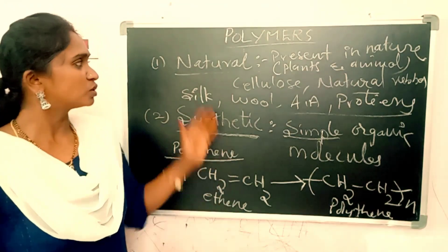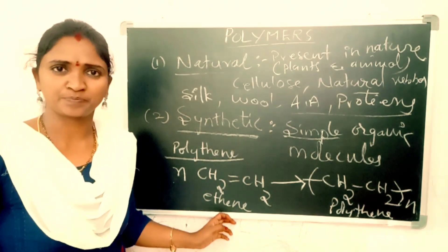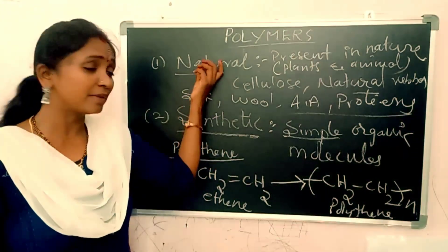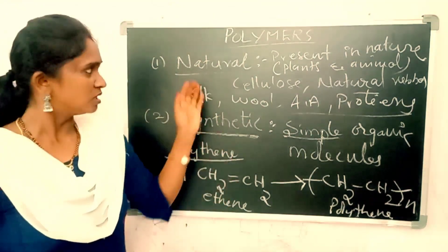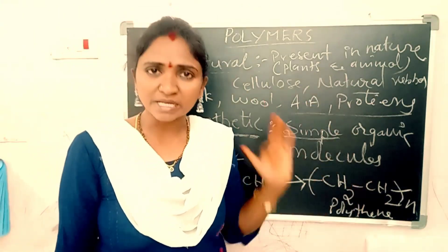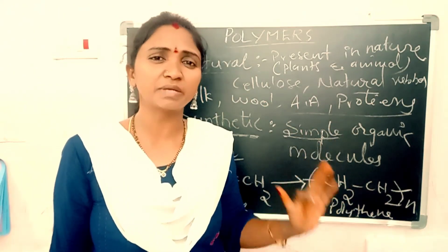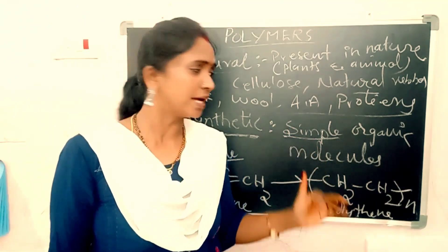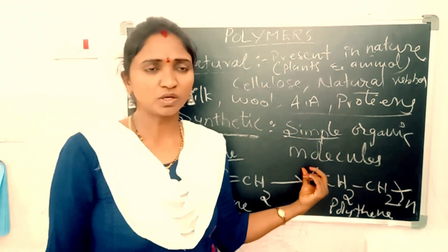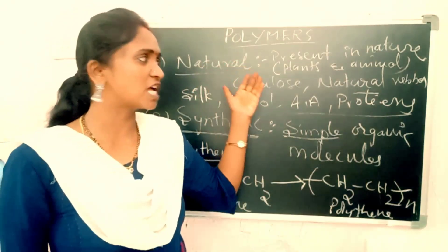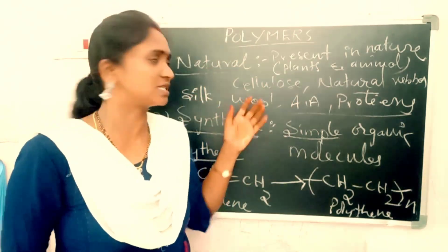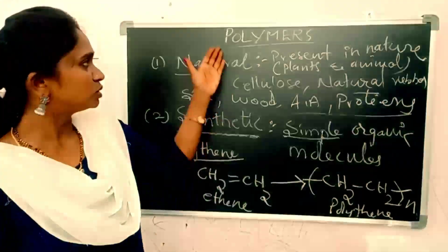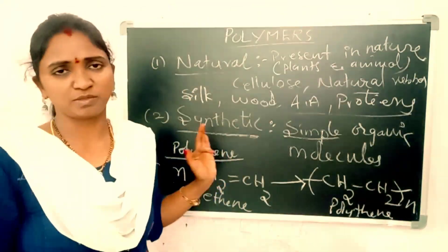So these are the two types of polymers: natural polymers and synthetic polymers — the basic, main classification. Natural polymers are present in nature or obtained from nature itself. Synthetic polymers are those formed by simple organic molecules. Examples of natural polymers include cellulose, natural rubber, proteins, amino acids, wood, and so on.